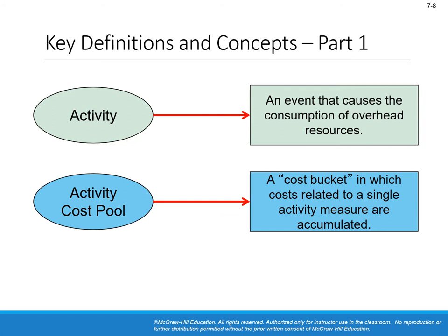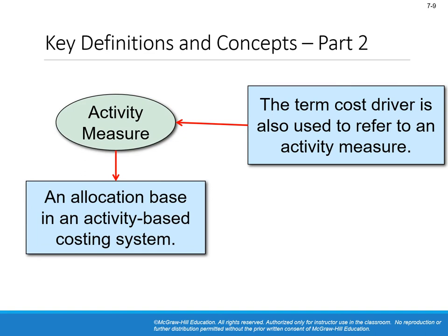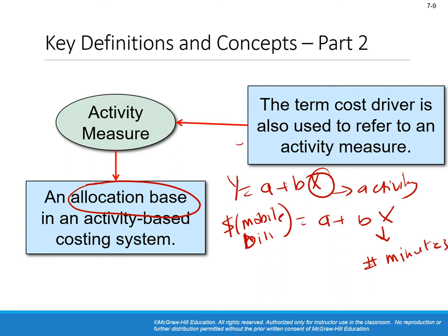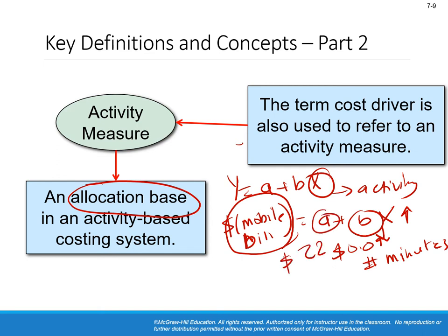An activity cost pool is a cost bucket — a box of the same kind of costs. The activity measure or allocation base you know from chapter 2. As an example: if y is the cost of my mobile phone bill, then x is expected to be the number of minutes spoken. As x increases by one minute, the total bill increases by b — in our class example it was 0.09 dollars, and the intercept alpha was 22 dollars.